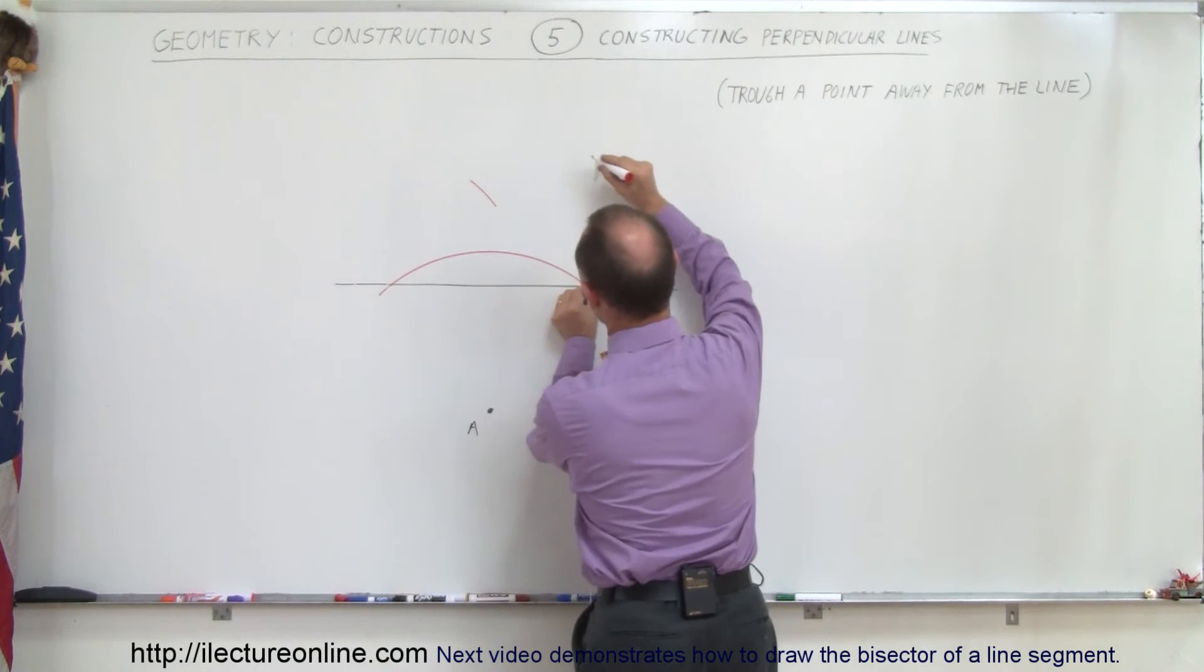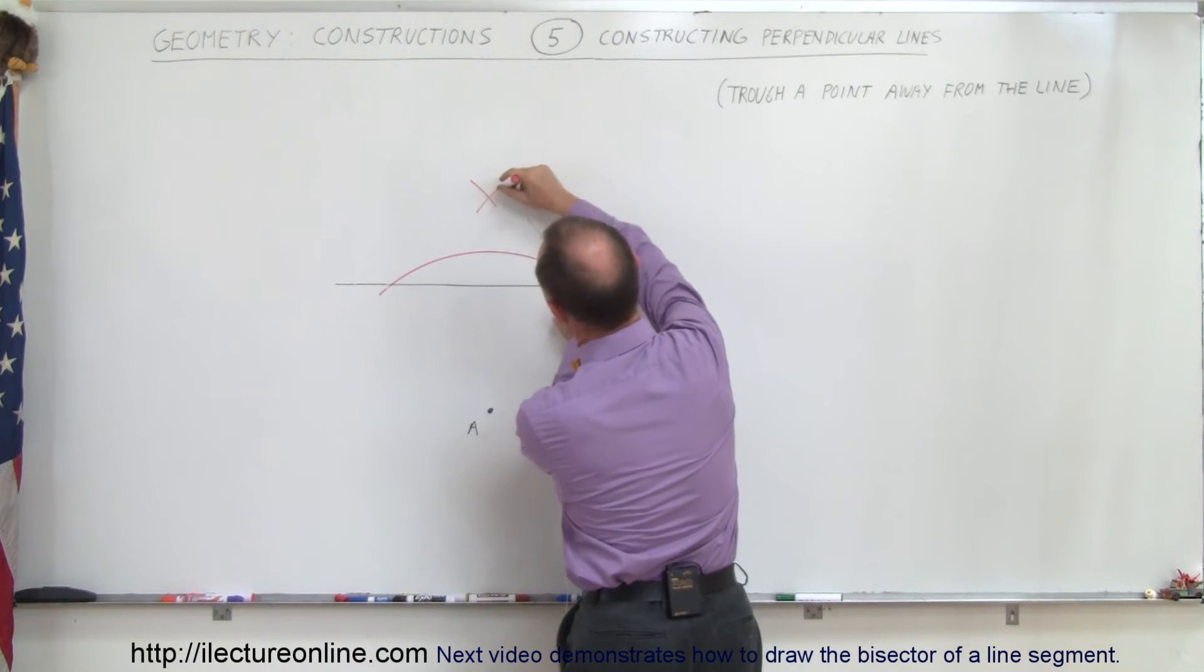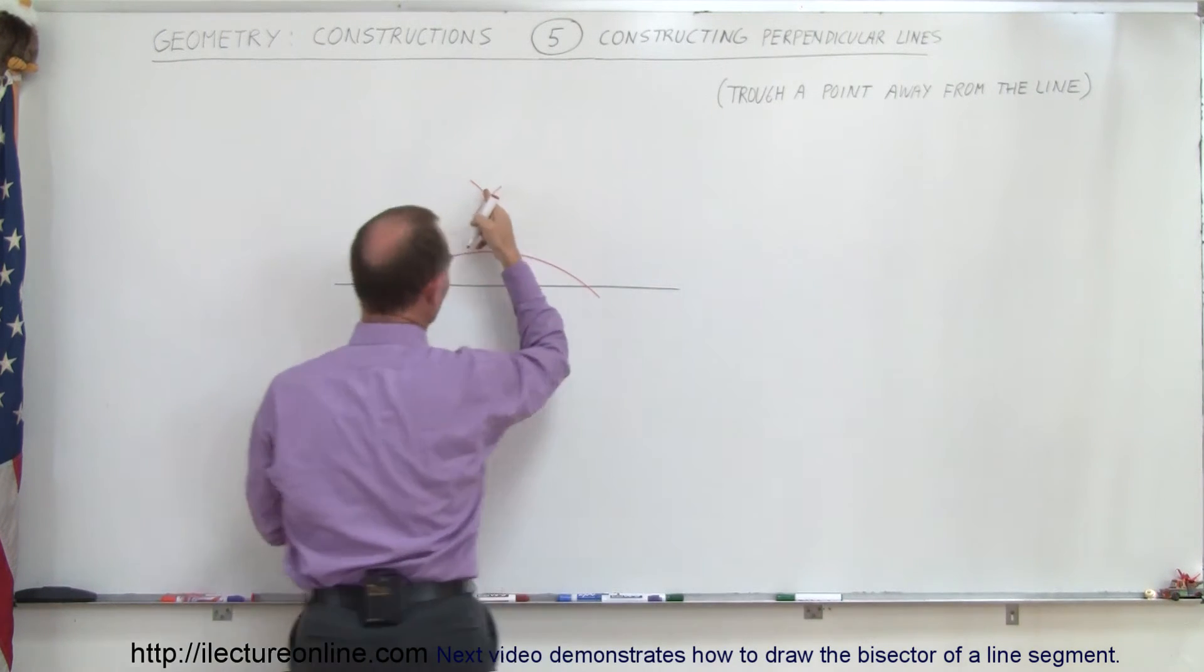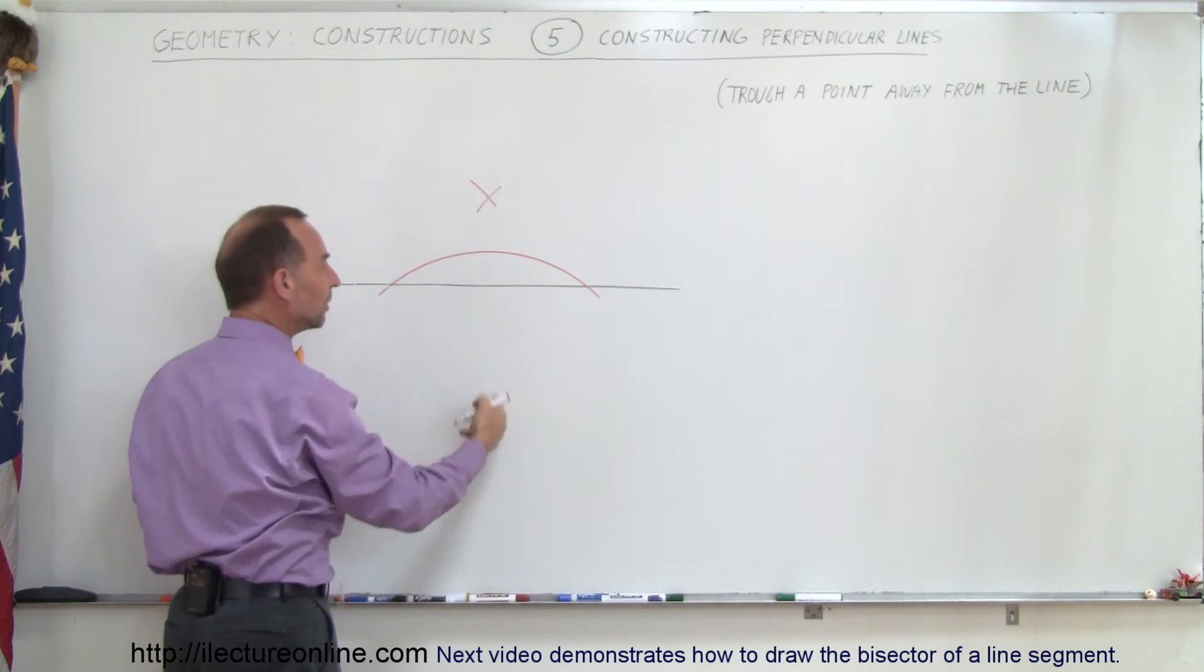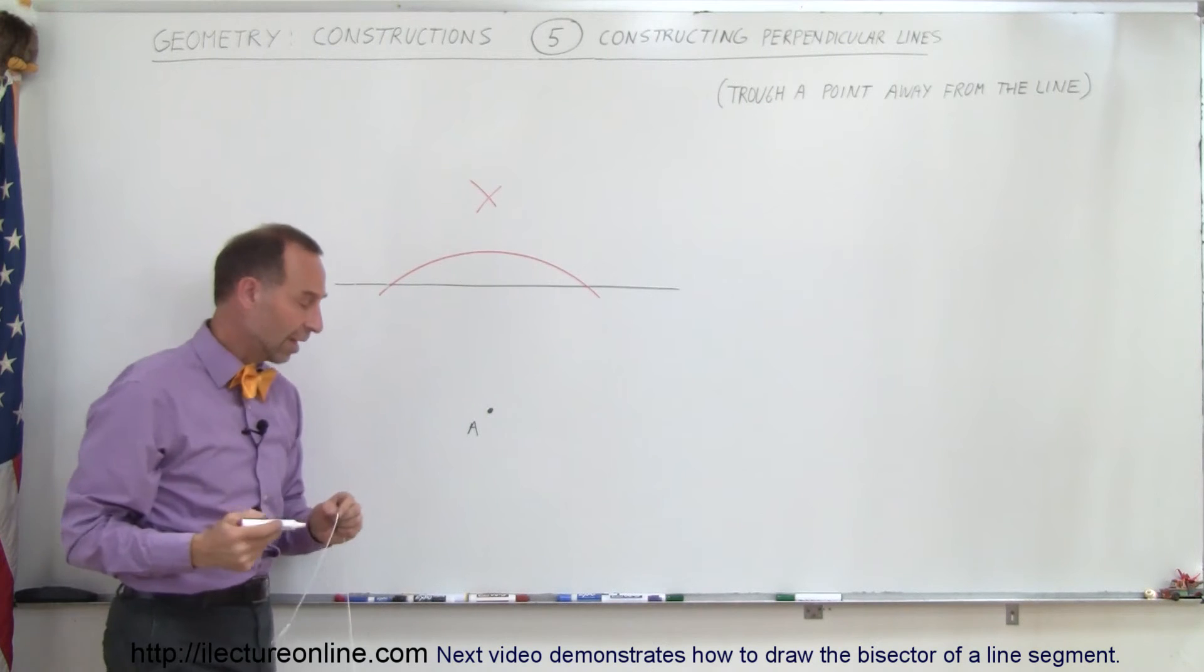Keep the very same length, go over there, draw a little arc line right there. Now that point should be directly across from this point, and if you connect those two points, that line will be perpendicular to the horizontal line.